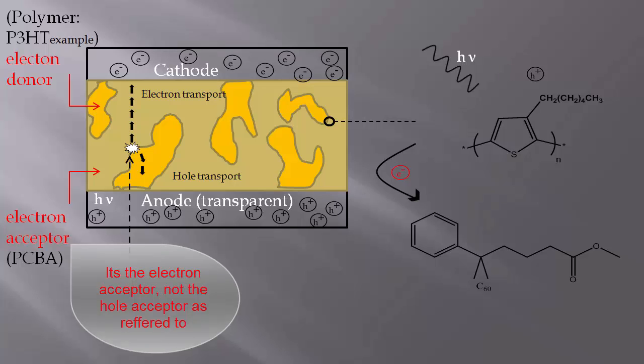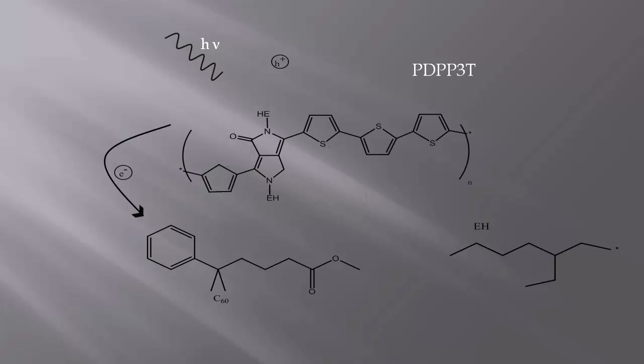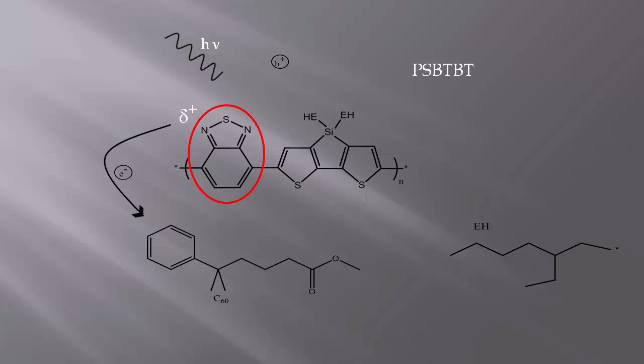The electron donor can be any of a whole variety of developed conjugated polymers. But most of them share the same structural elements, most notably an electron-poor and an electron-rich motif, which creates a partial charge on the backbone. It lowers the band gap, allowing the electrons to be promoted more easily.